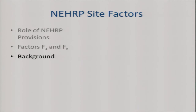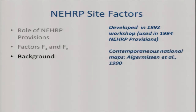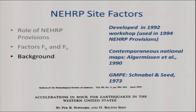A little background on how these factors came to be: they were developed in 1992 through a workshop that produced recommendations adopted for the first time in the 1994 NEHRP provisions. At that time the national maps were published by Algermissen at the USGS, based on a GMPE. The GMPE used for the western US was by Schnabel and Seed, published in 1973. They used rock records, and for soil records they deconvolved the motions down to rock so that all records were intended to be for rock conditions.